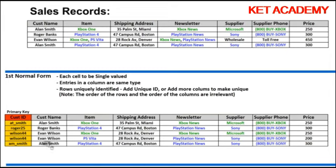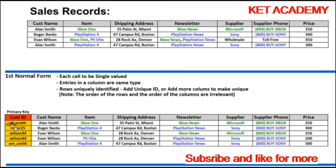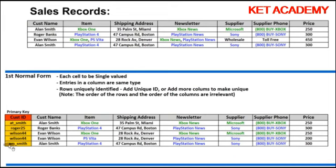These people are made to create a customer ID by signing in to this website. This person's full name is Alan Thomas Smith, so he created user ID A.T. Smith. Roger Banks has Roger25, Evan Wilson is Wilson44, and the other person's name is Alan Michael Smith so his user ID is A.M. Smith. Now we know for sure that these two people have nothing to do with each other, and we can uniquely identify each of these customers.